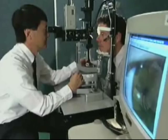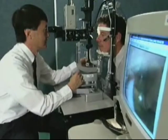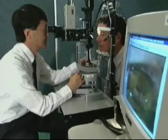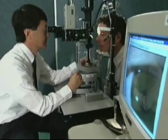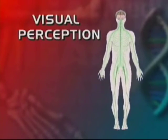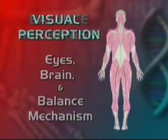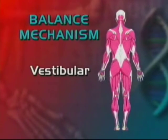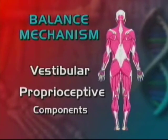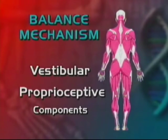Do you realize that even though you may have perfect vision, you may not be seeing the whole picture? Visual perception involves your eyes, brain, and balance mechanism. The balance mechanism and its vestibular and proprioceptive components were discussed in the first module on spatial disorientation.